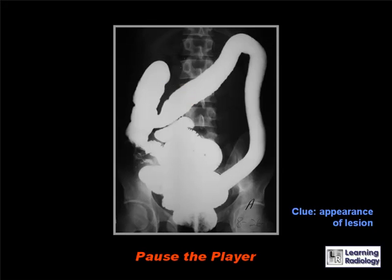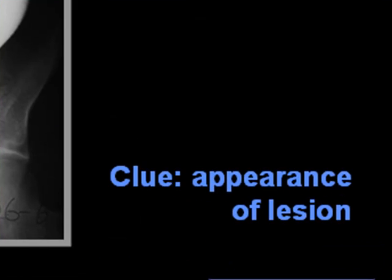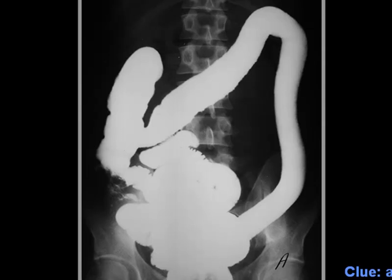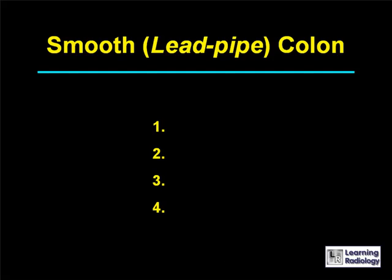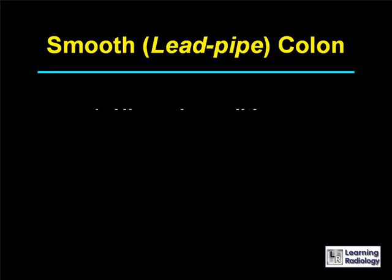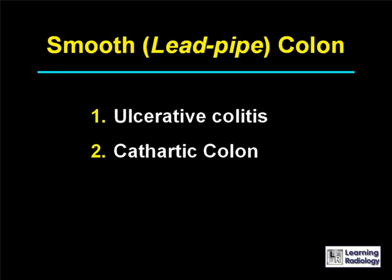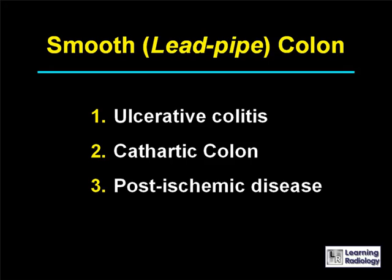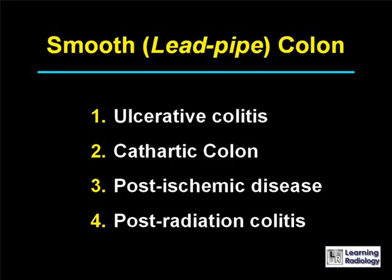The differential is for a smooth or so-called lead pipe colon. There are four causes: ulcerative colitis, a cathartic colon, post-ischemic disease, and post-radiation colitis.